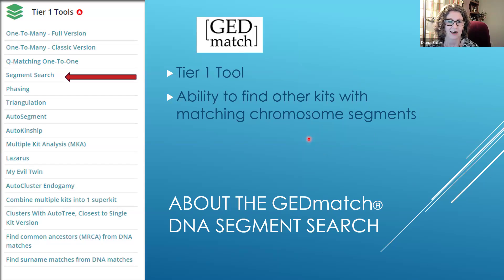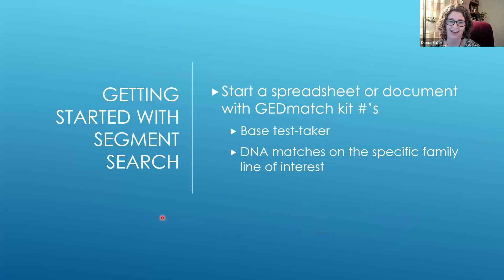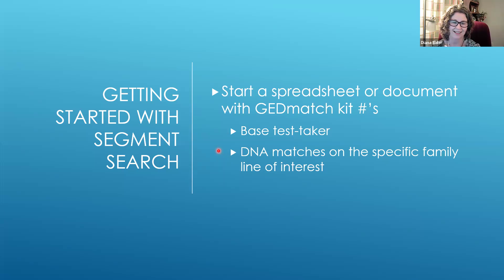Let's go back to GEDmatch and look first at the Tier 1 tool, segment search, which has the ability to find other kits with matching chromosome segments. One tip right at the beginning: start a spreadsheet or document with the GEDmatch kit numbers, because you'll find yourself entering them over and over. I'm using myself as the base test taker. I had both Mary and Jane — my DNA matches on the Klein-Weatherford lines — and I had their kit numbers in my spreadsheet. I also like to have the person's name, their GEDmatch kit number, and their line going back to the ancestral couple.